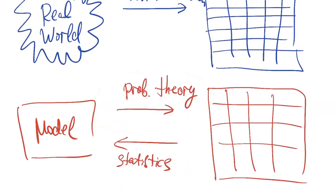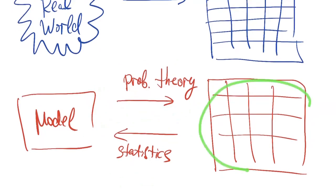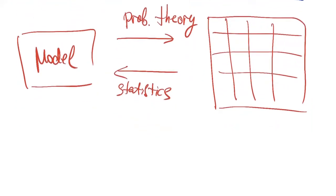We need to know just a little bit about probability theory. At the next lecture, we will discuss some elements of probability theory. But today, we will mostly discuss types of data and some simple analytical methods that allow us to deal with them. Let us begin with types of data and types of variables.